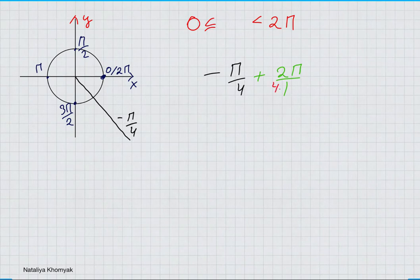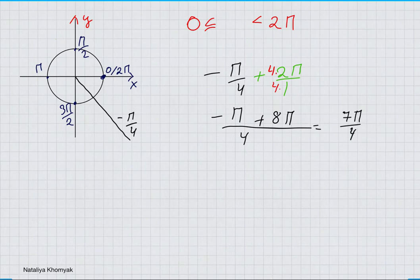So now we have negative π/4 plus 4 times 2, which is 8π. The difference between negative π and 8π would be 7π/4. So negative π/4 in the clockwise direction is equivalent to 7π/4.